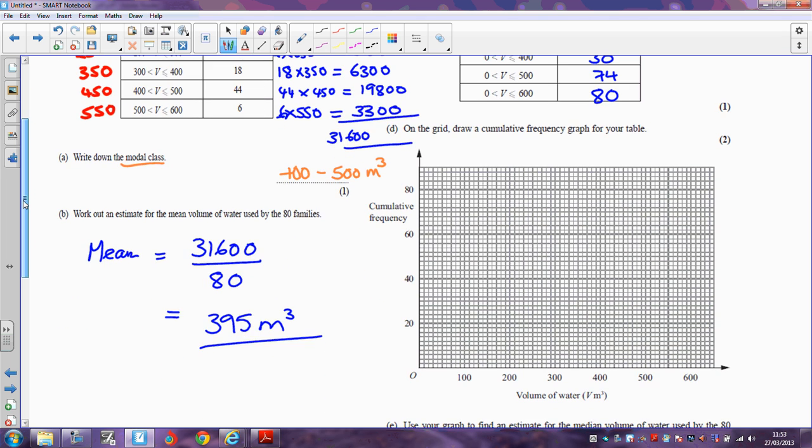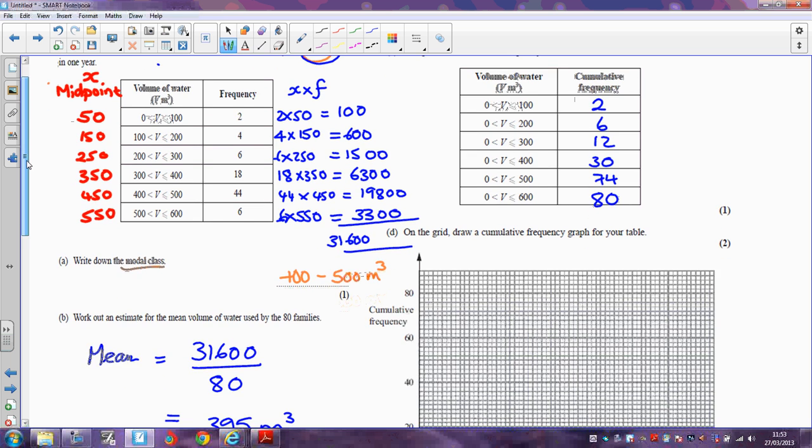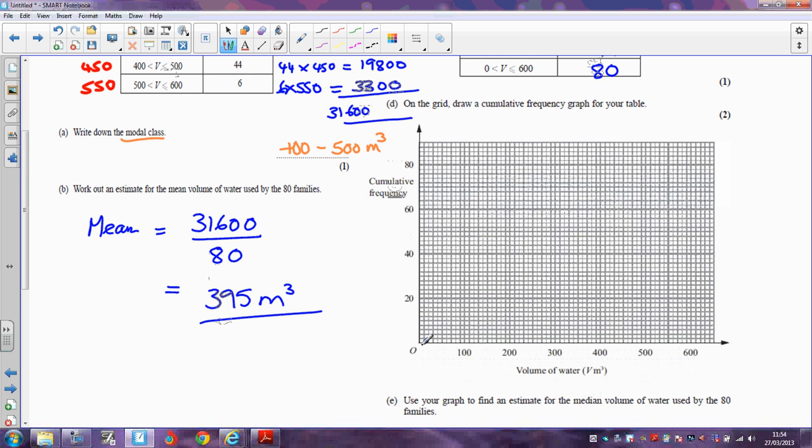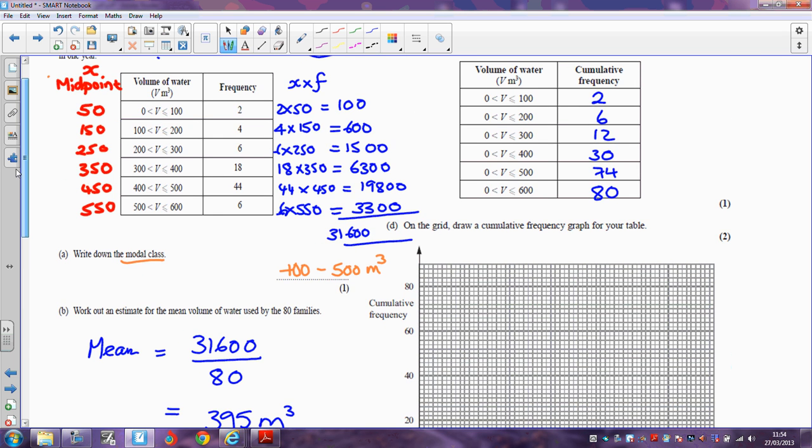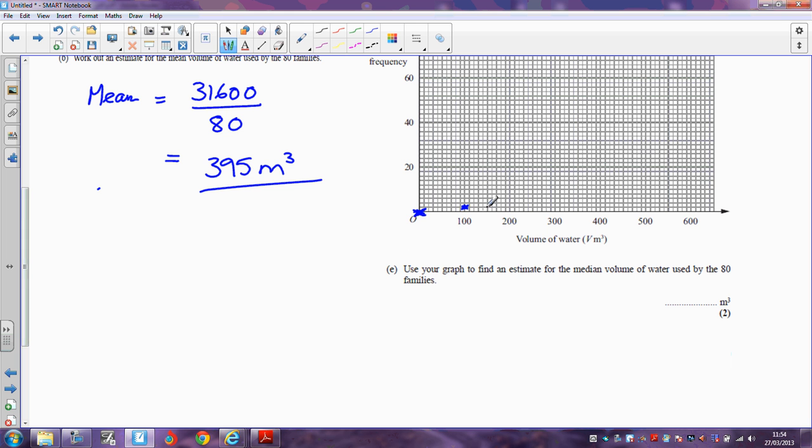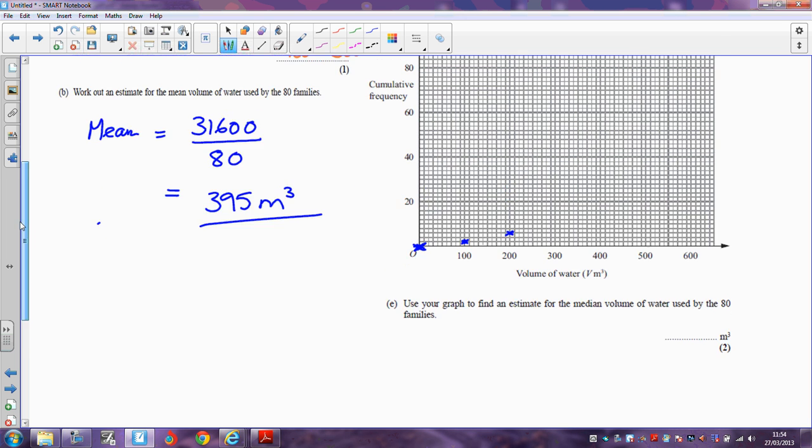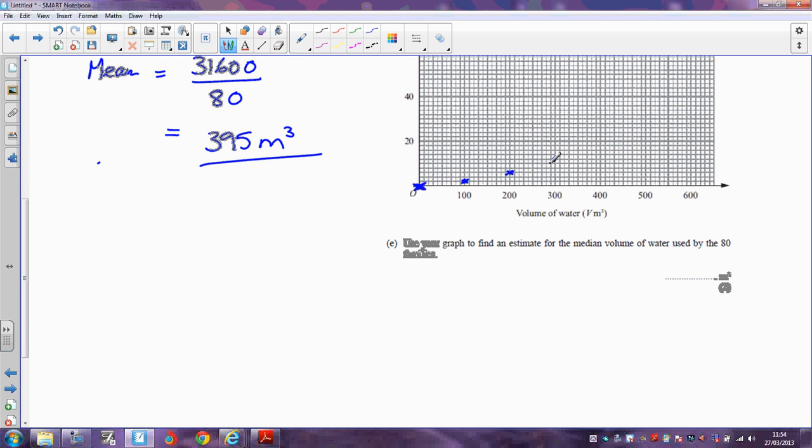What we now need to do is on the grid draw a cumulative frequency graph. First of all, we know that no one used less than 0 cubic metres of water, that would be difficult. We then know that 2 families used less than 100, so here's 100. 2 families here corresponds to just 1 square. We've got 6 families used less than 200, so we do 200 and then 3 squares, which is there. 12 families used less than 300, so 12 is going to be 6 squares, which is going there.